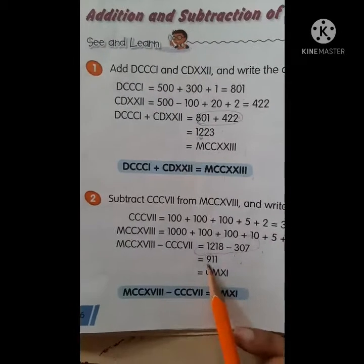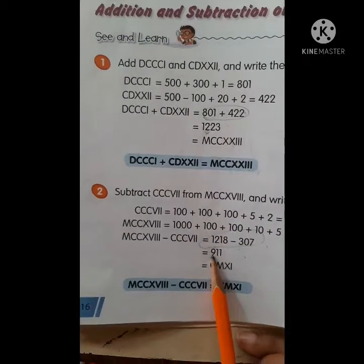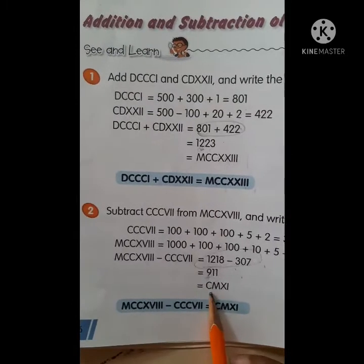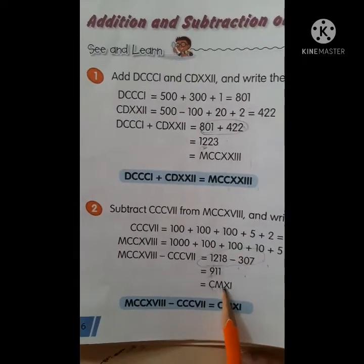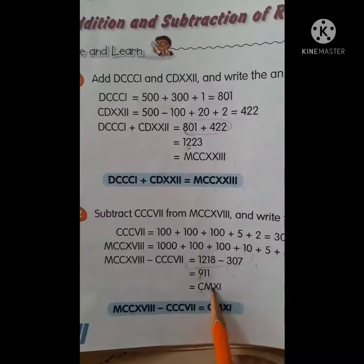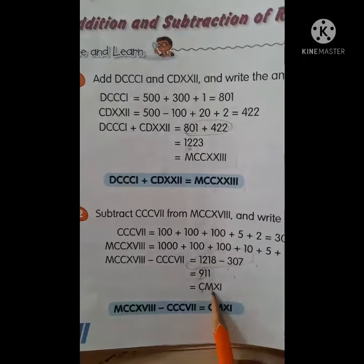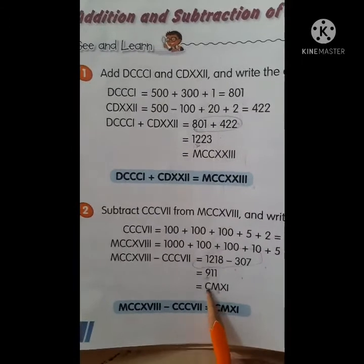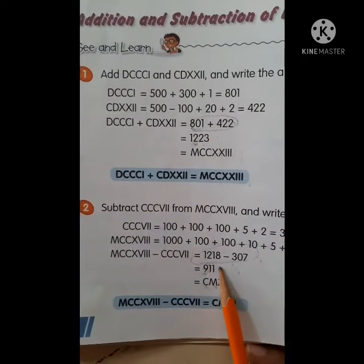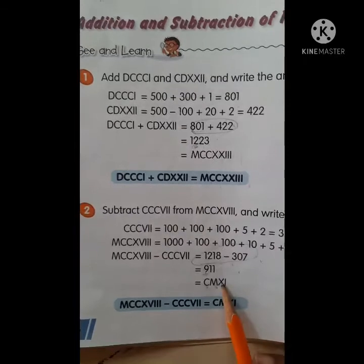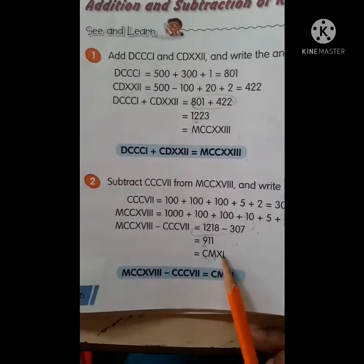Now we write 911 in Roman numerals. 900 is less than 1000, so it is written as CM, meaning 1000 minus 100. Then 11 is written as X plus I, giving XI. So the final answer is CMXI.